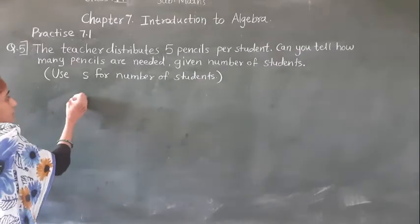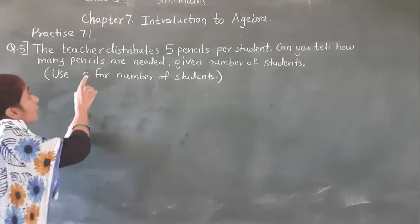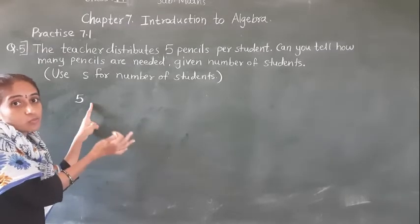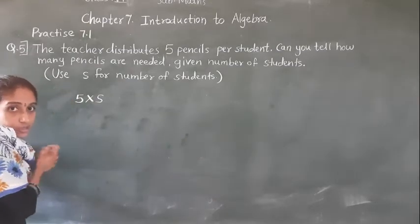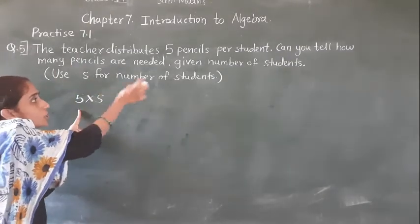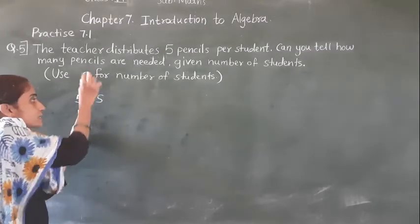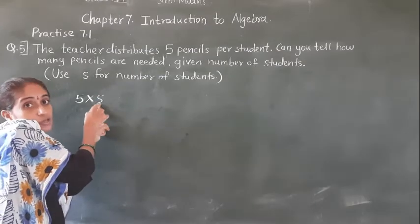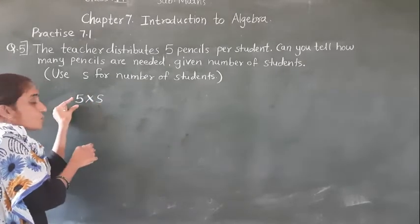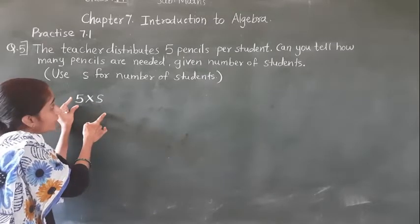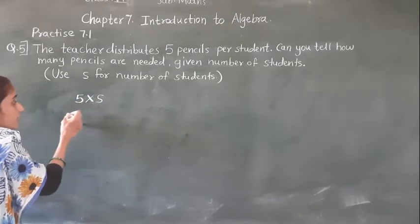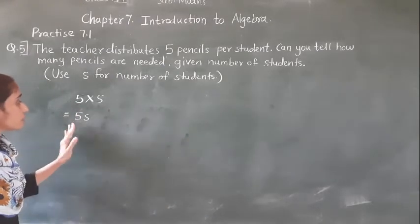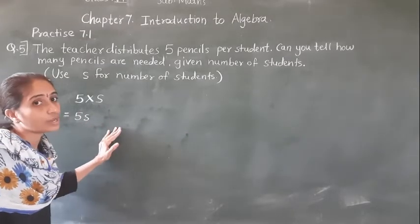For one student, 5 pencils. So for S number of students, how many pencils? So 5 multiplied by S. For one student 5, then for S number of students, 5 multiplied by S. Since S is the variable, 5 into S equals 5S. So the answer is 5S.